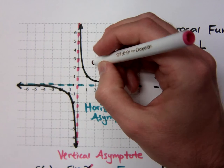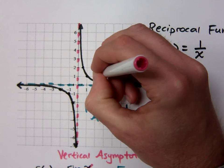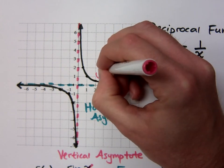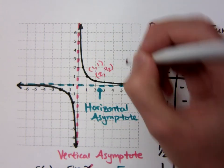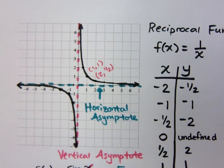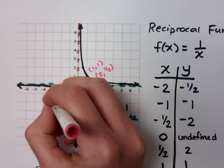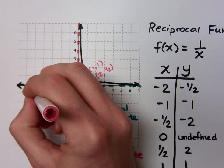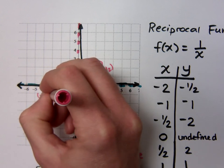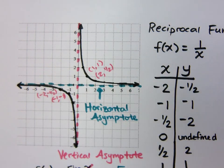The ordered pairs that I have here, like 2 and 1 half, or 1, 1, if you were to do the negative of both of those coordinates, you come over here and you have negative 1, negative 1, and you have this point, which is negative 2, negative 1 half. That's how you know you've got origin symmetry. Okay?